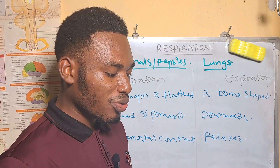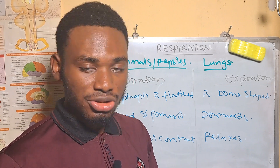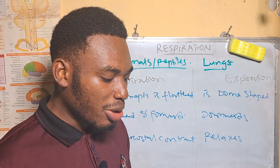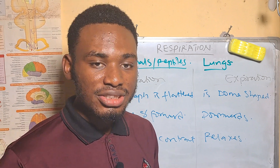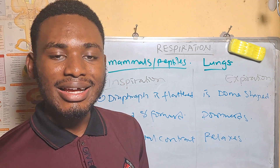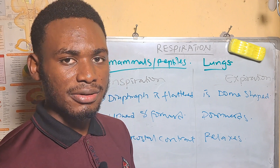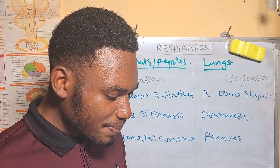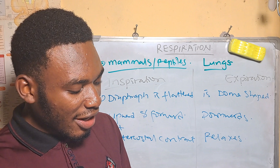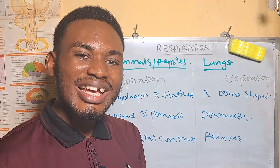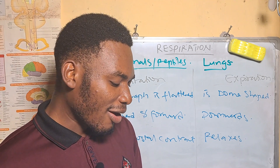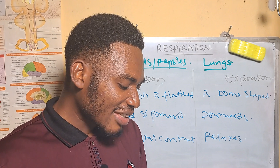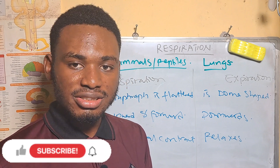Question two: Gaseous exchange in bony fish is carried out through — A nostrils, B lateral lines, C gills, D skin. The answer is C — gills. Question three: Which of the following statements is true of inhalation of air by man? A — the ribs are not raised; B — the diaphragm is raised; C — intercostal muscles relax; D — the size of the thoracic cavity increases. The answer is D: the size of the thoracic cavity increases.